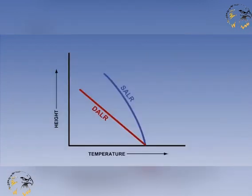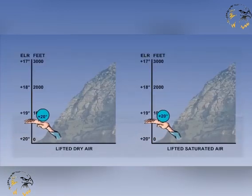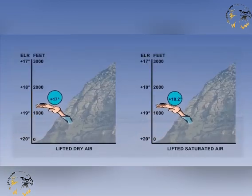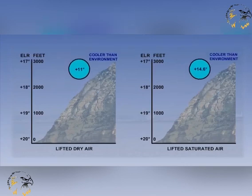Now let's look at the opposite case. If we consider this part of the ELR, then the situation is defined as being absolutely stable. This is when the ELR, the environmental lapse rate, is less than the SALR. Therefore, the parcel of air will never be warmer than its surroundings, and so will stay in the same approximate position.